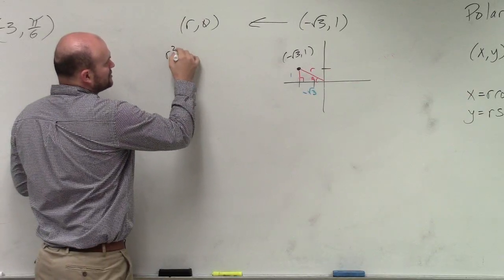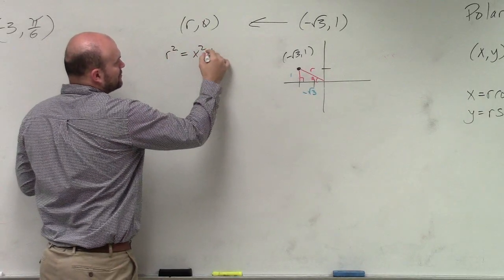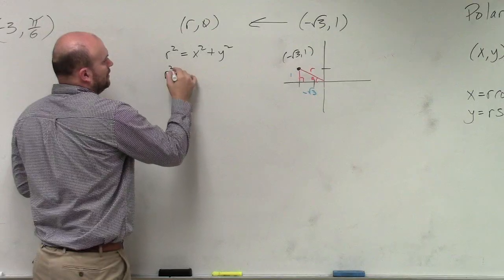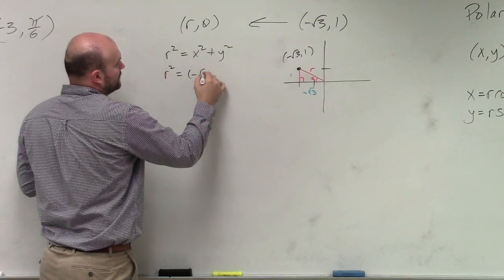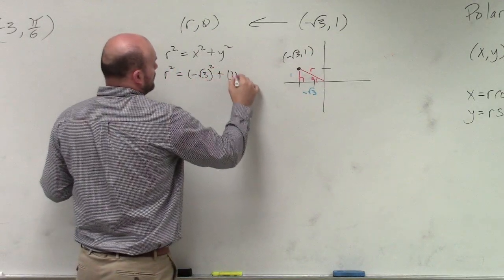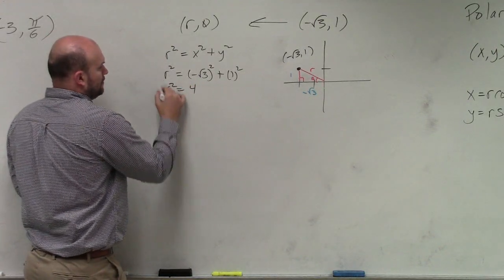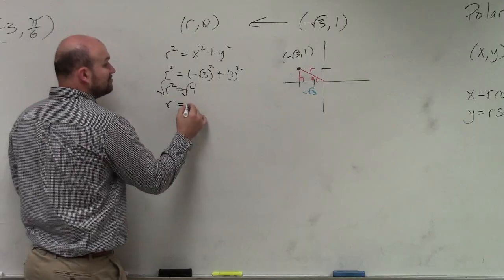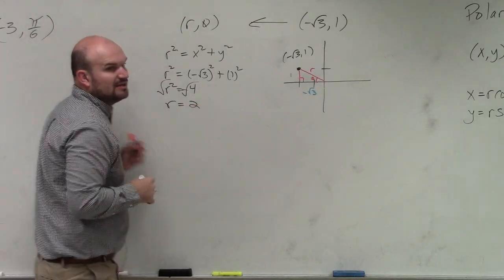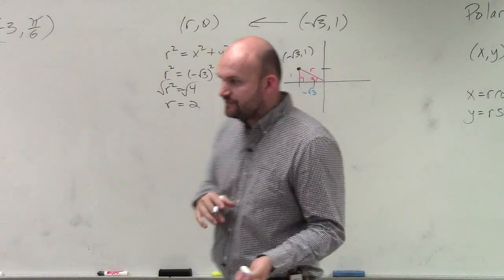So to find r, r squared equals x squared plus y squared. r squared equals negative square root of 3 squared plus 1 squared. So that becomes 3 plus 1 is 4. r equals plus or minus 2, but since we're talking about distance, we're only going to deal with the positive 2.